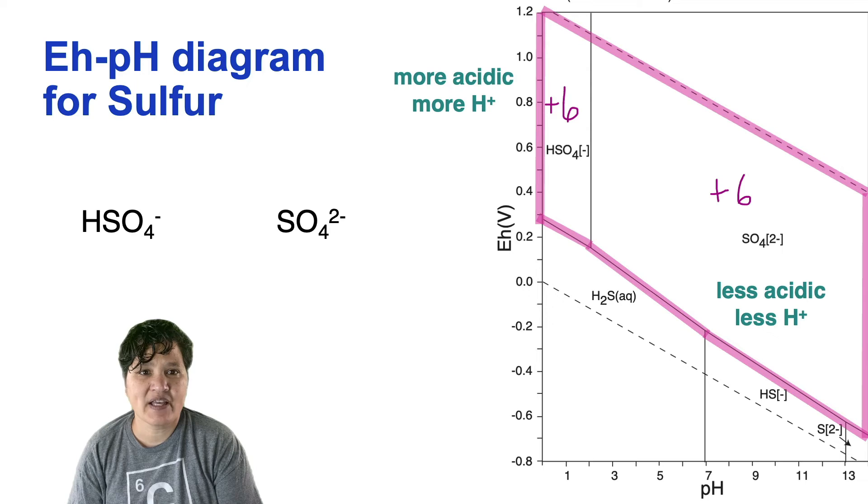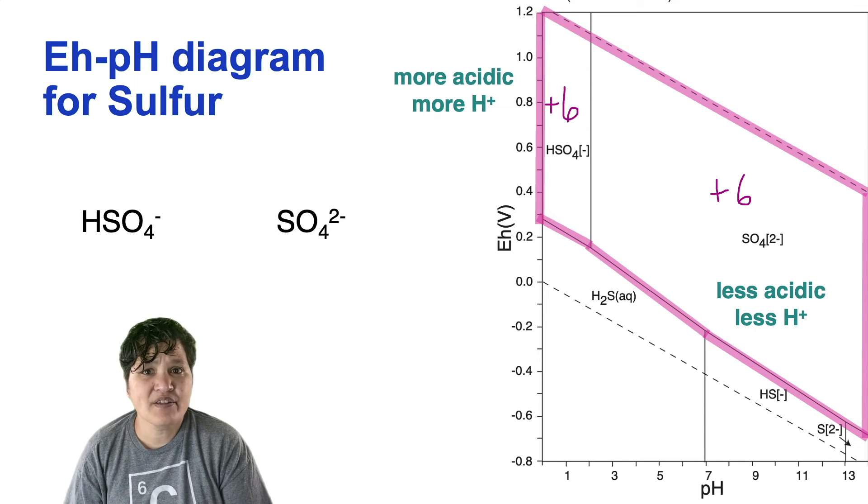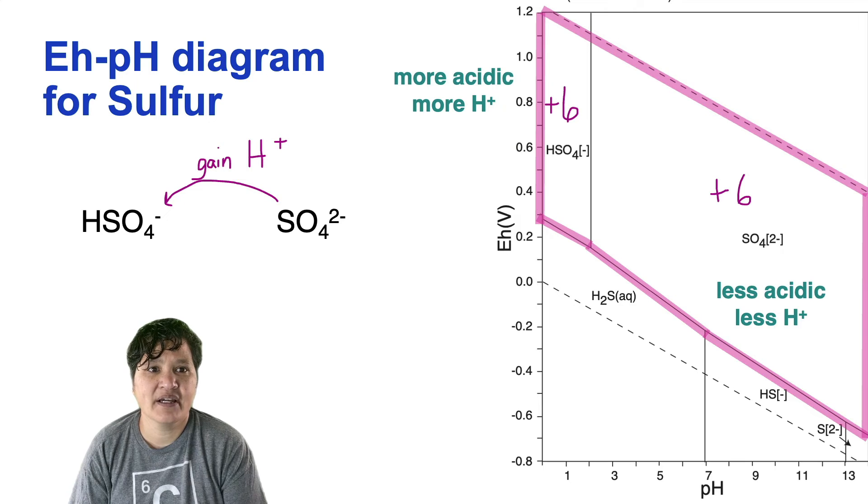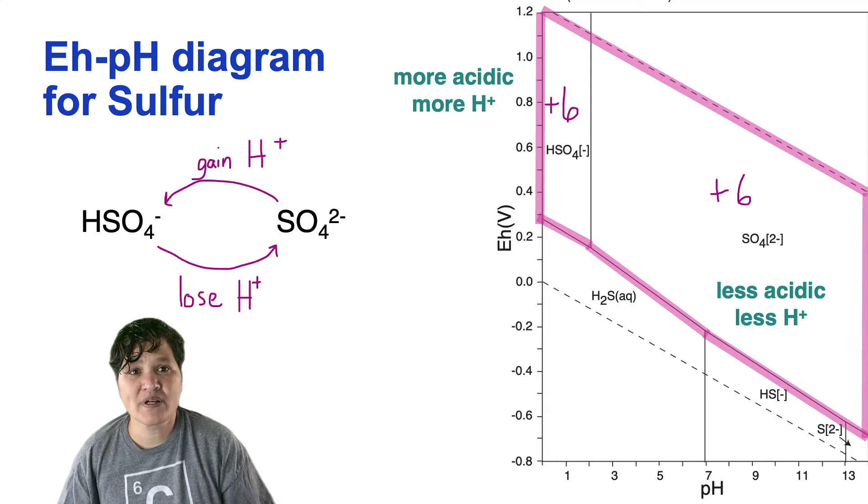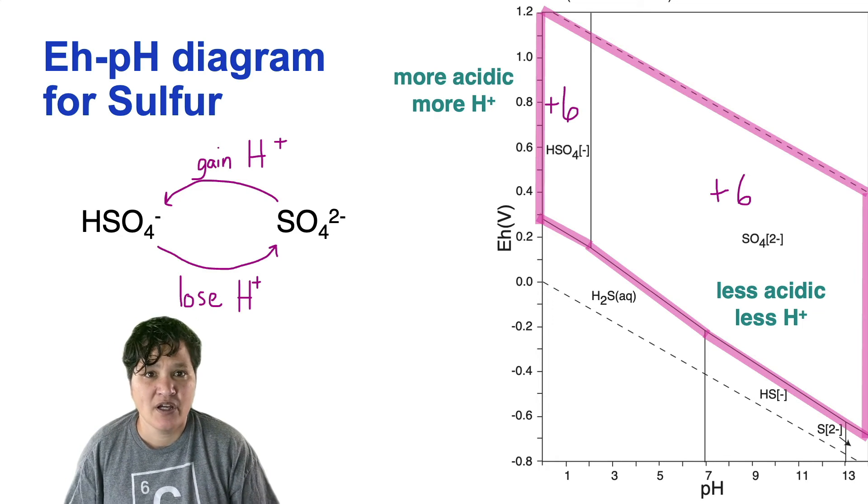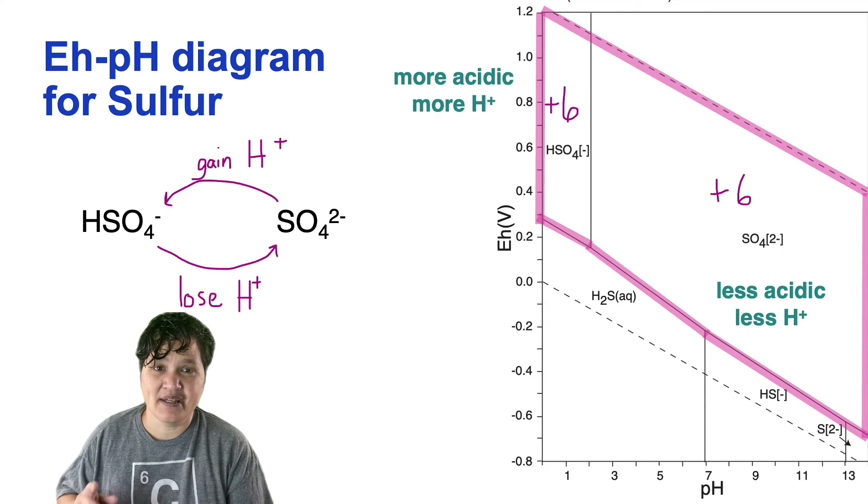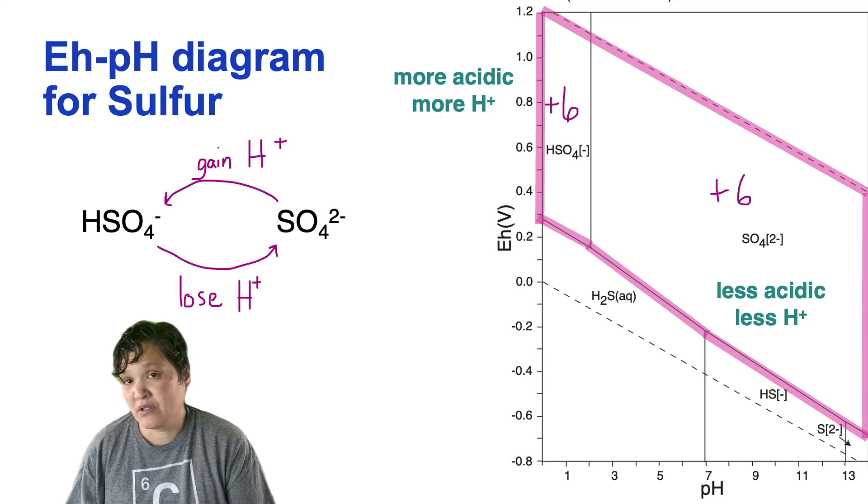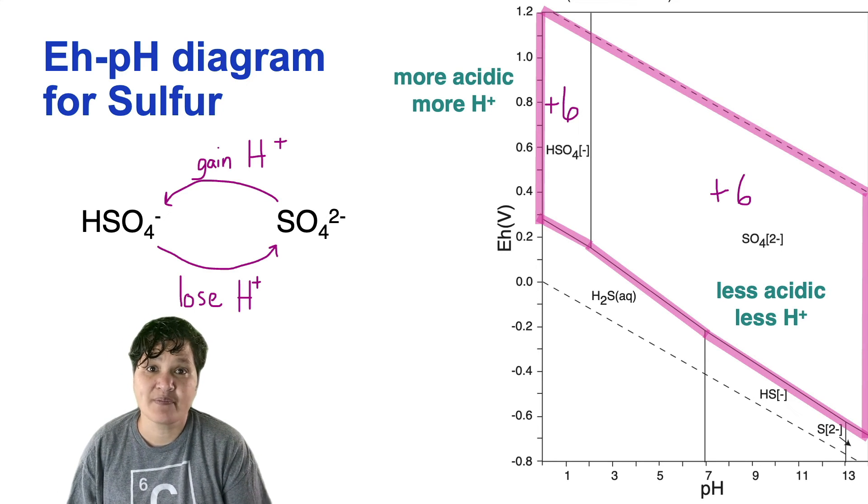Now let's look at another aspect of this diagram, and to do that I'm going to focus in on our plus 6 species. As you cross the vertical line between them, what changes? Going from SO42- to HSO4-, you gain an H+. But if you're going the other direction, you're losing an H+. Put that into context on the graph. If you move to a more acidic part of the diagram, you gain an H+, which makes sense because there should be more H+ ions available to react in a more acidic environment. By contrast, if you move to a more basic or less acidic environment, there should be fewer H+ ions. So losing an H+ from your species makes a lot of sense.